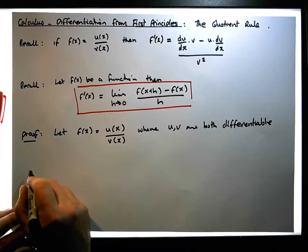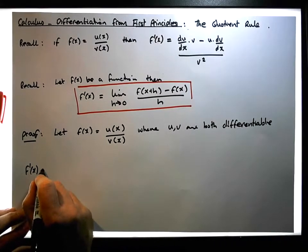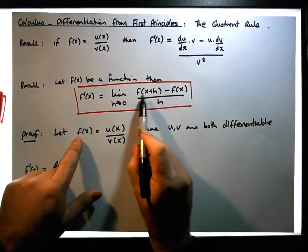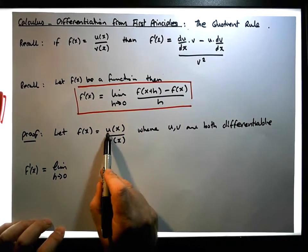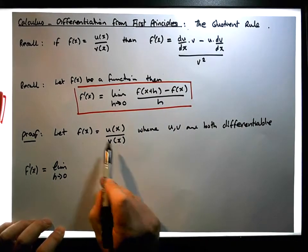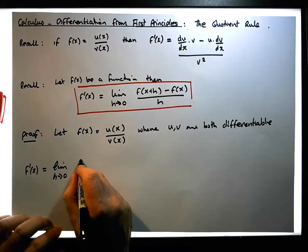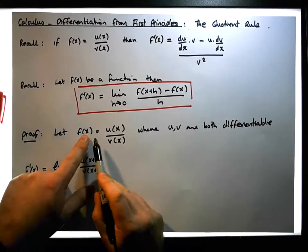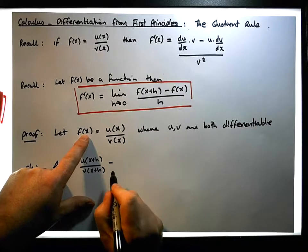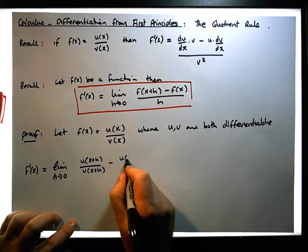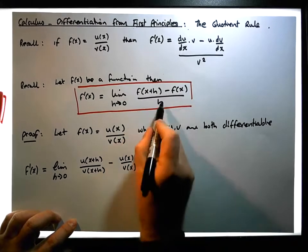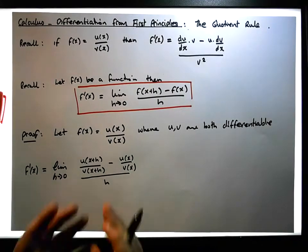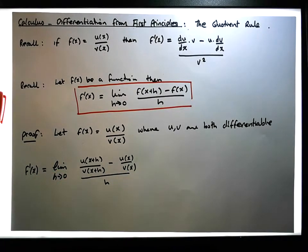Now, we want to calculate the derivative of f of x using the limit definition. So f prime of x must be equal to the limit as h tends to zero of f of x plus h minus f of x, all over h. Since f of x equals u of x divided by v of x, then f of x plus h equals u of x plus h over v of x plus h, and f of x equals u of x over v of x, all divided by h.